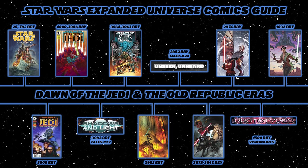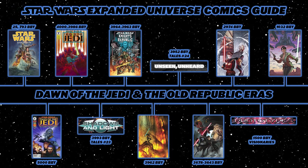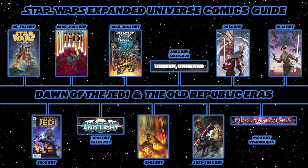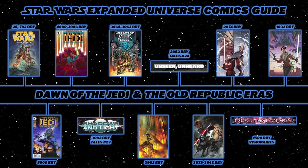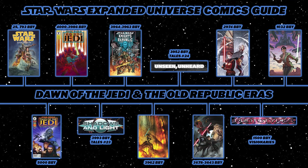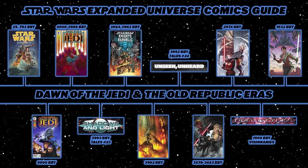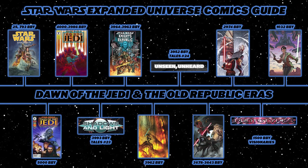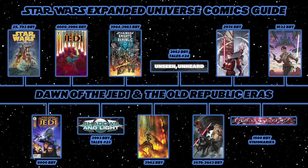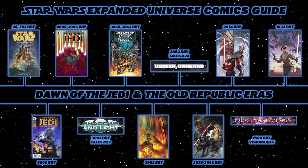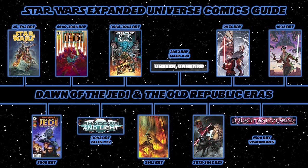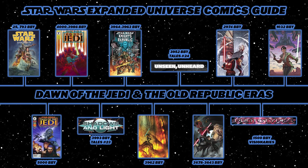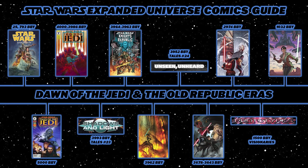Knights of the Old Republic ran for 52 issues, then was wrapped up in the miniseries Knights of the Old Republic War. After that, read the short story from Star Wars Tales number 24, Unseen Unheard — a story from the perspective of Visas Marr, telling how she became the apprentice to Darth Nihilus.